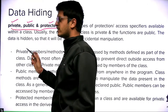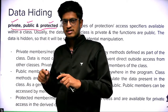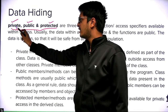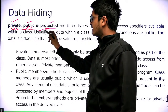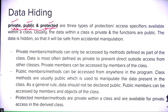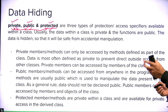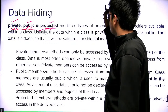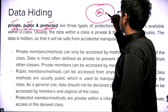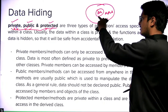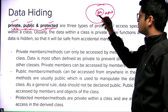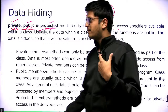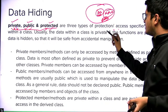Private members cannot be accessed outside the class. Public members can be inherited and can be accessed outside the class. Protected members cannot be accessed outside the class, but can be inherited. Usually, the data within a class is private and the functions are public. You can have some private methods which you don't want to run outside the class, but the public methods can call them.